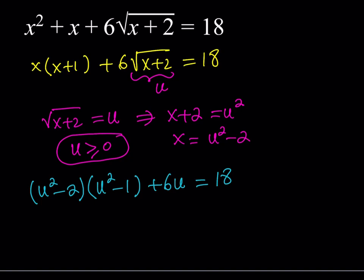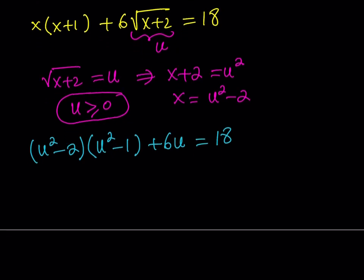This is kind of nice because you know why? If we were squaring both sides, we would have to deal with 18 squared, which would have to be a large number, 324, so on and so forth. And we would have to square a trinomial, lots of terms, and put it together. So let's see how this helps us. So we're going to distribute, obviously. This is going to be u to the fourth minus u squared minus 2u squared plus 2 plus 6u is equal to 18.